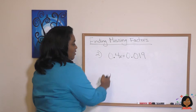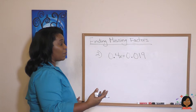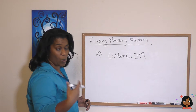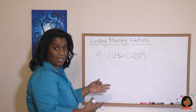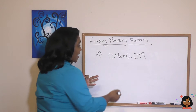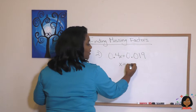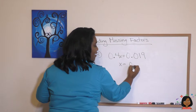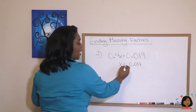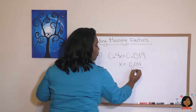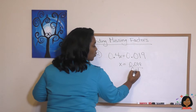What happens when you have a decimal? The process is still the same. Take a look: we have 0.4x = 0.019. We're still going to do the opposite of multiplication — we're going to divide. So on this side we're left with x, and on this side we have 0.019 over 0.4.